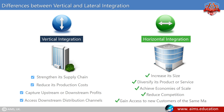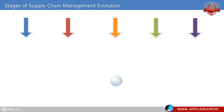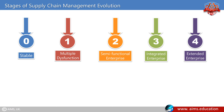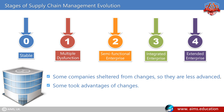Stages of supply chain management evolution. The advances in supply chain management are reflected in each supply chain's development. There are typically four or five sequential stages globally and within organizations, starting from stage 0 to 4: stable, multiple dysfunction, semi-functional enterprise, integrated enterprise, and extended enterprise. Every organization falls somewhere within these five stages. Some companies sheltered from changes so they are less advanced, some took advantage of changes, and some organizations believe that they are in the most advanced stage.